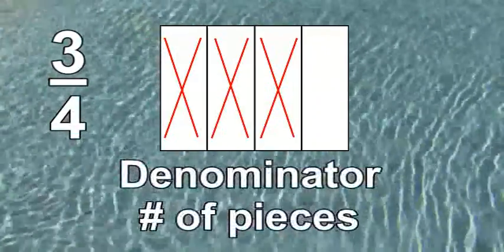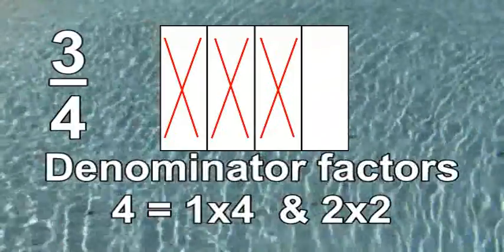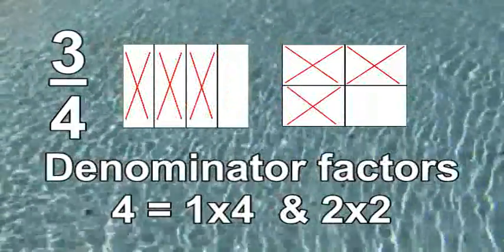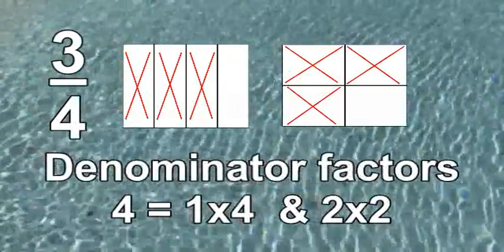In summary: a fraction can be modeled with a rectangle. The denominator tells you the number of pieces in your rectangle. The numerator tells you the number of pieces that you will X out. The factors of the denominator tell you how many ways you can model the fraction — in this case, three-fourths can be modeled two ways. Finally, by using the model, you can see if the fraction is more than one half or less than one half. In this case, three-fourths takes up more than half of the rectangle.